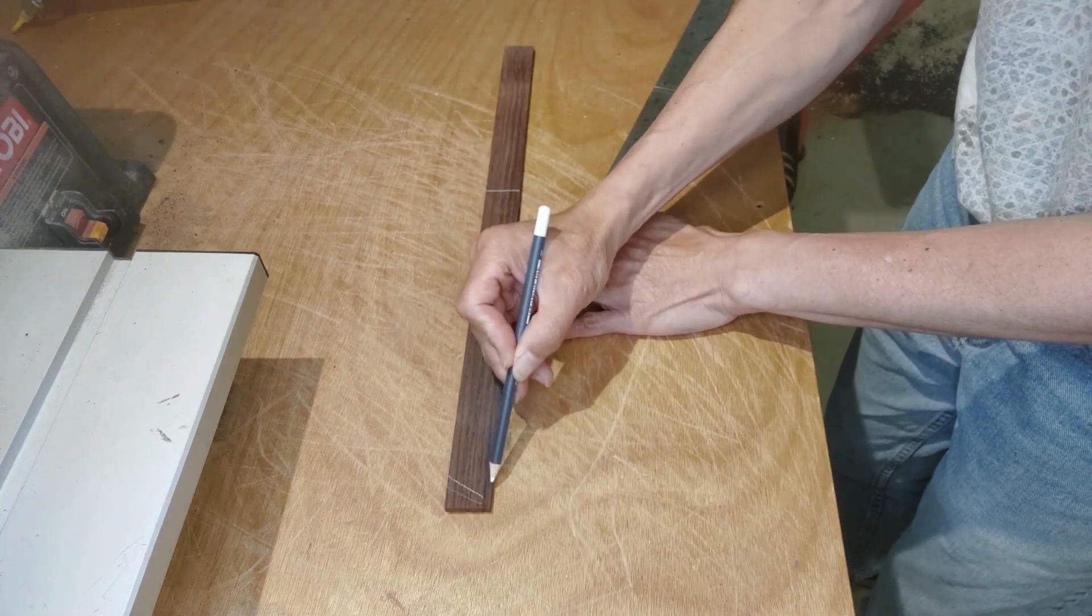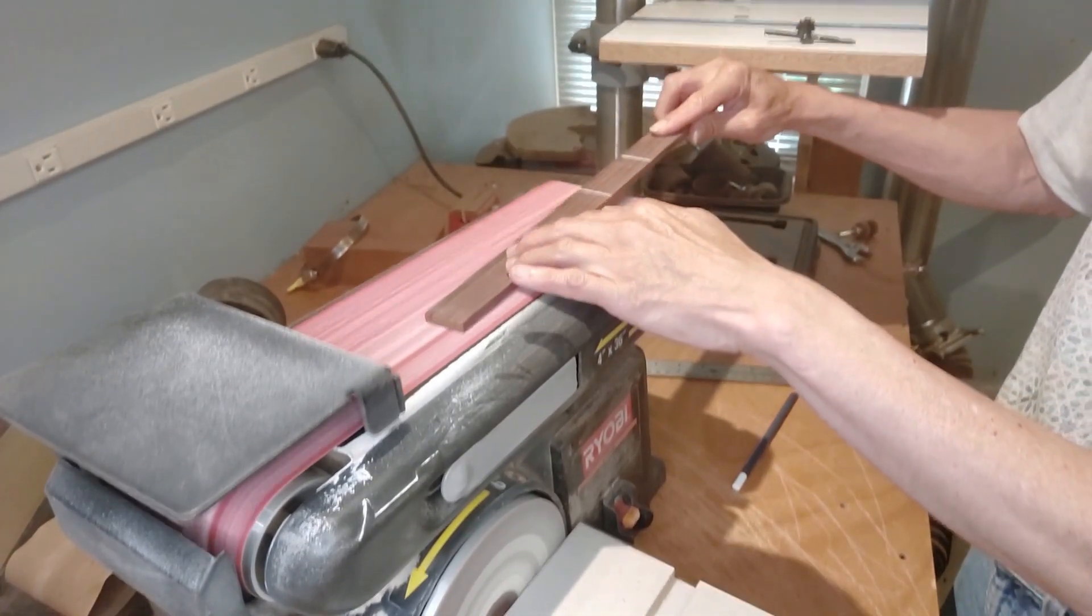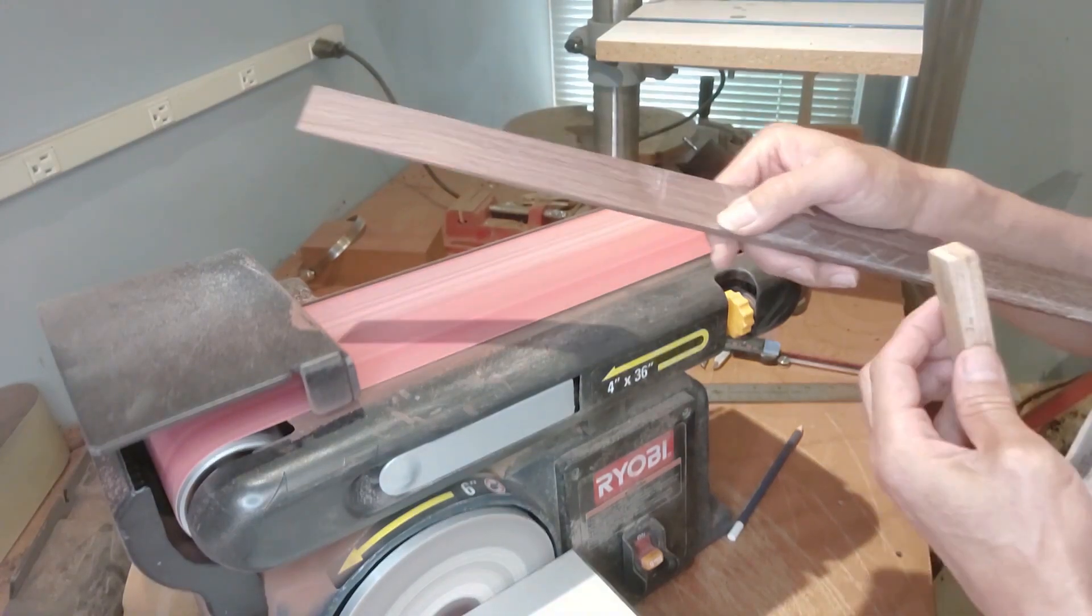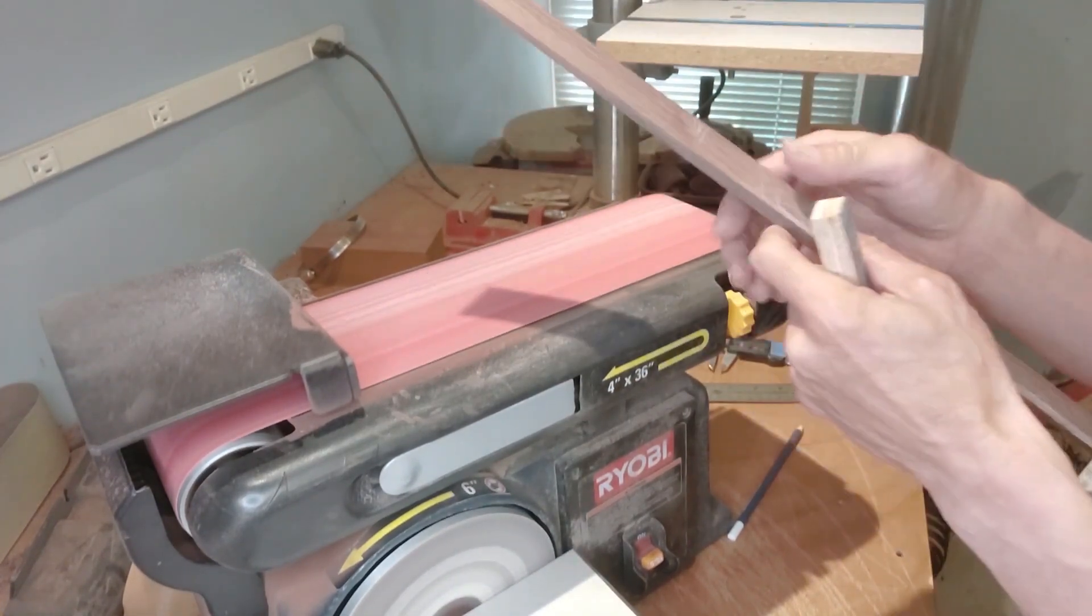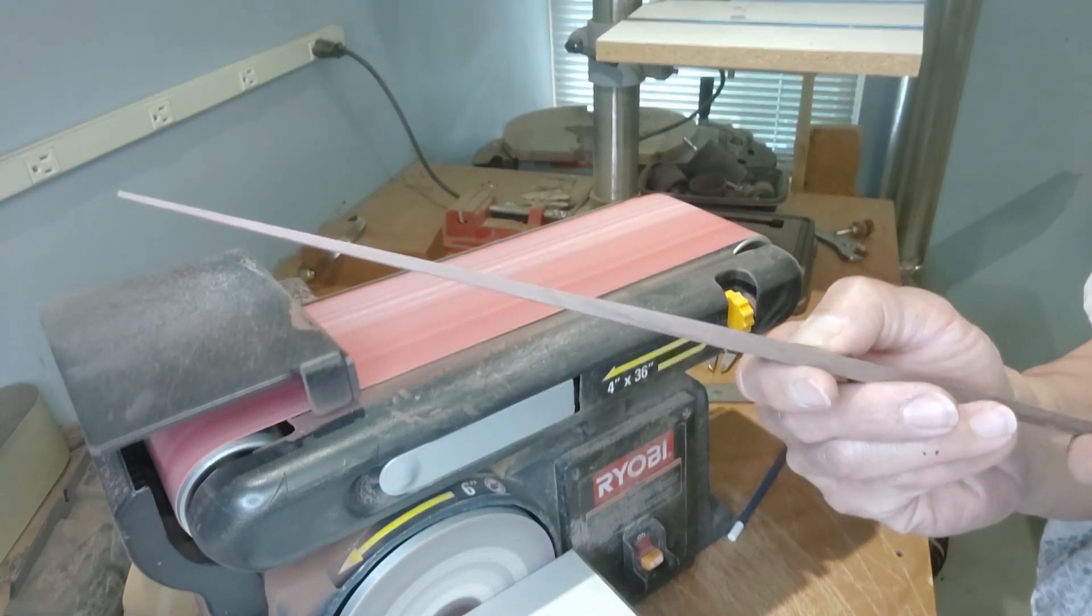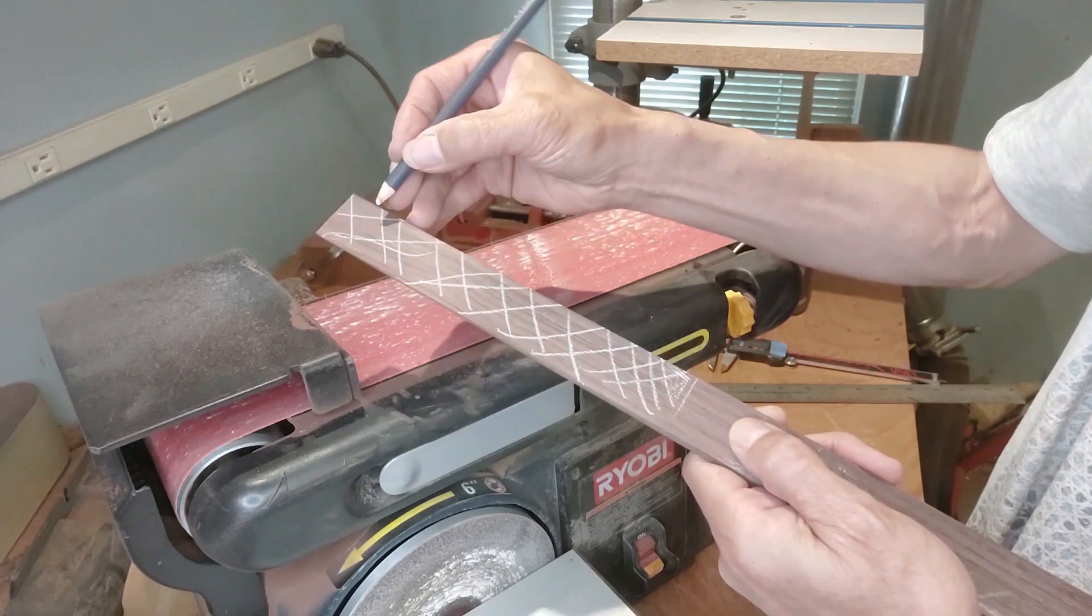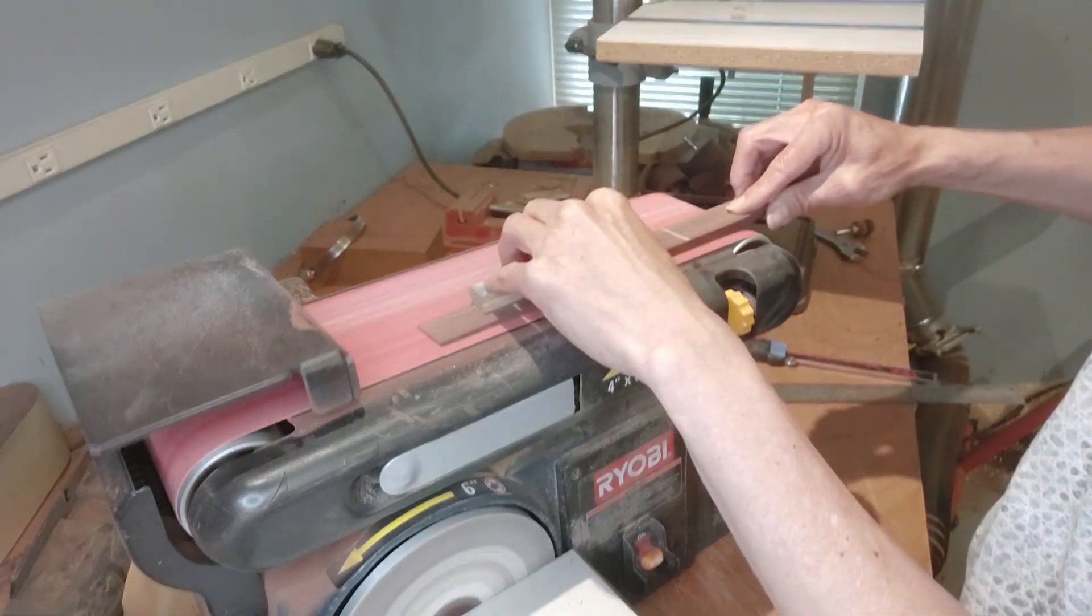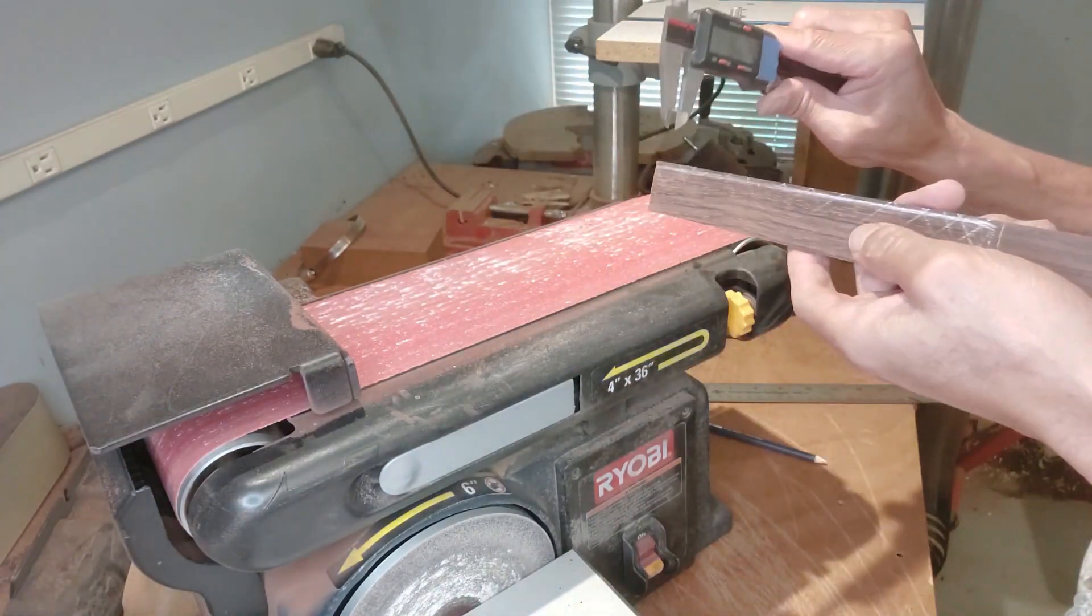To sand the wedge, I mark witness lines to show where I've removed material on the belt sander and check thicknesses with a caliper. It helps to use a block of wood to press down and keep everything even and flat. When the wedge is complete, I mark another set of witness lines on the side that will eventually face the strings and taper in a direction that's 90 degrees to the first taper. This helps make it exactly clear what thickness your string hits the gauge.